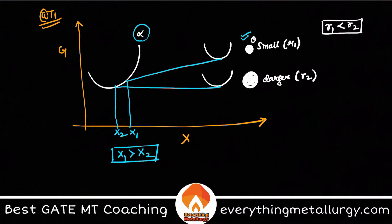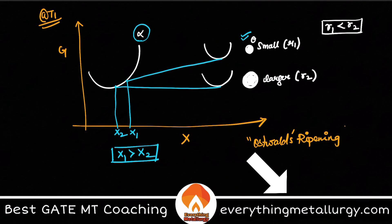This phenomenon is called Ostwald ripening — it is nothing but precipitate coarsening.